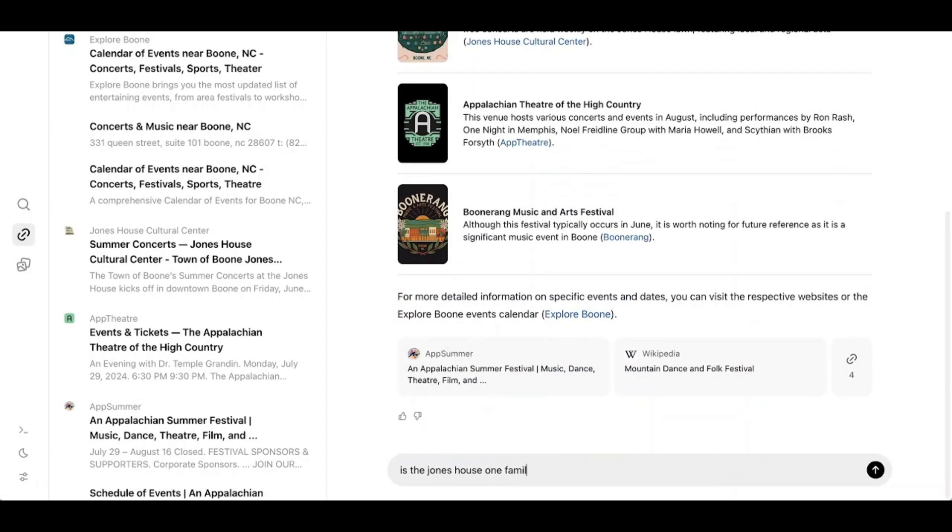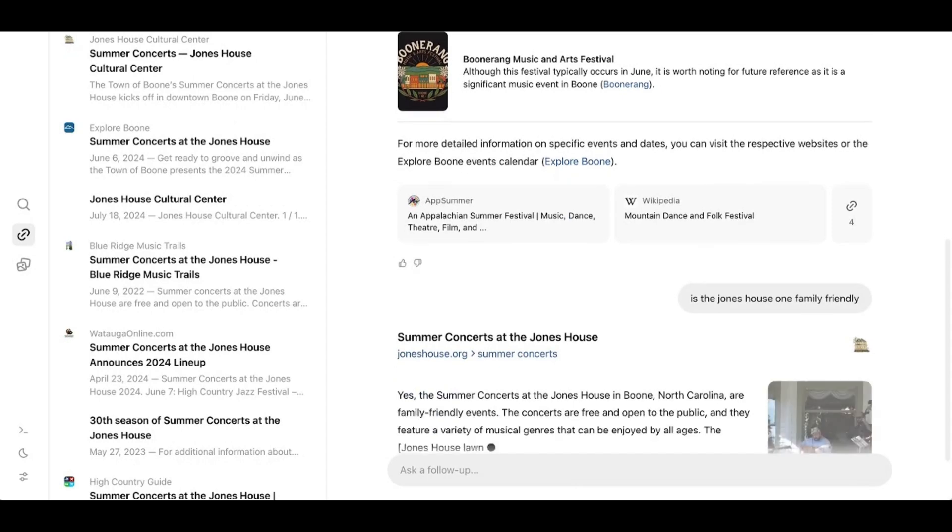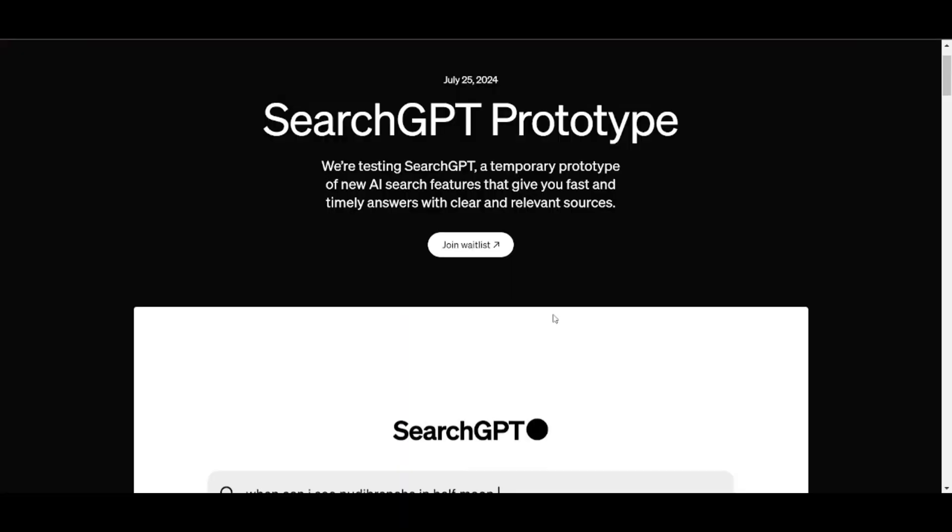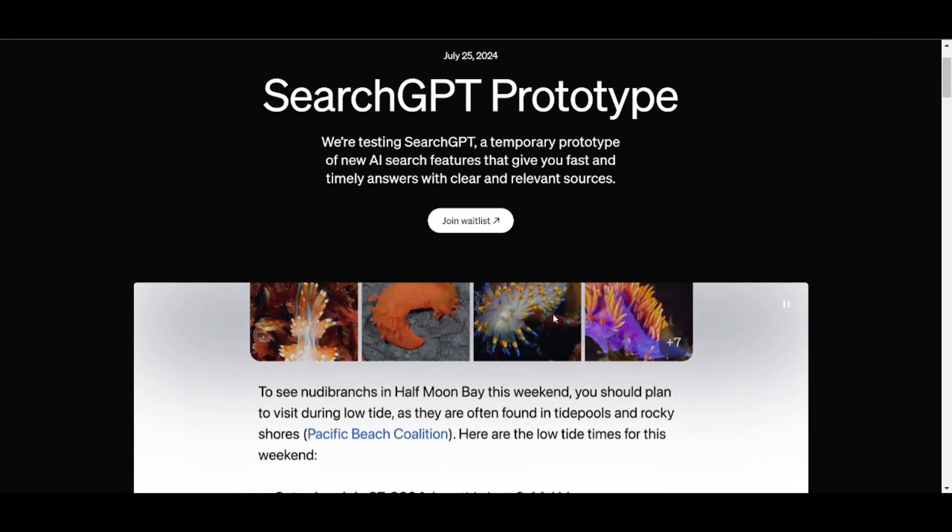But what do we know from what OpenAI has said? According to OpenAI, they believe that by enhancing the conversational capabilities of models with real-time information from the web, finding what you're looking for can be faster and easier.